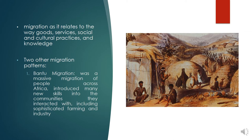The Bantu migration was a massive migration of people across Africa about 2,000 years ago. It is the most important human migration to have occurred since the first human ancestors left Africa more than a million years ago. The Bantu migration had an enormous impact on Africa's economic, cultural, and political practices. Bantu migrants introduced many new skills, including sophisticated farming and industry — growing crops and forging tools and weapons from metal.